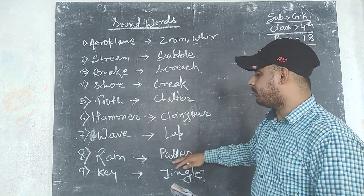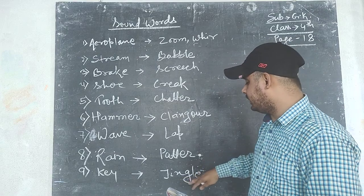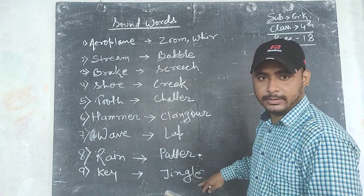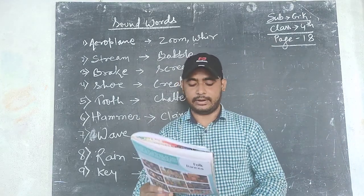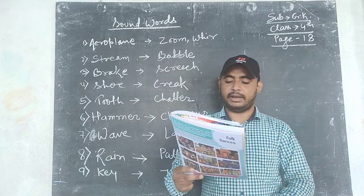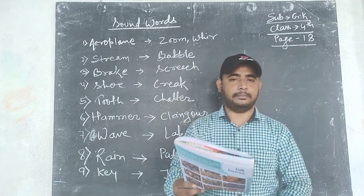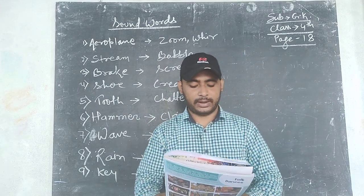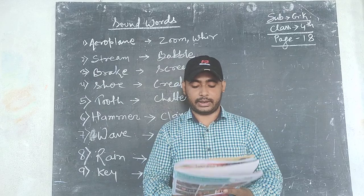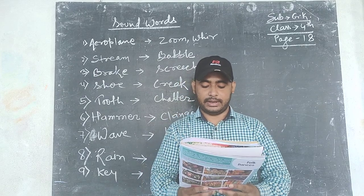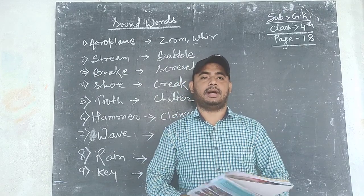Rain — patter. Key — jingle. Drum — number 10 answer: beat. Number 11 — leaf: rustle. Leaf rustle.